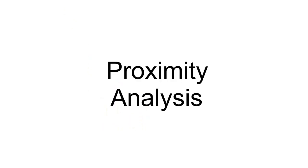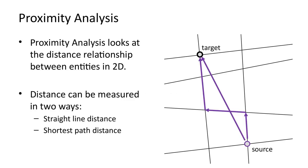In this video, we will look at various methods for calculating proximity. Proximity analysis calculates distances between entities in 2D. Distances can be measured in two ways: either as straight-line distance, or as shortest path distance.